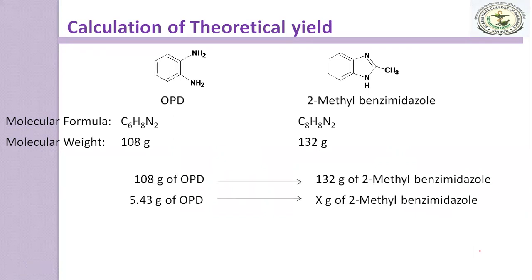So, 5.43 grams of OPD gives how much? So you have to just make a cross multiplication and you will get the value which is your theoretical yield. So, the theoretical yield is 6.63 grams.